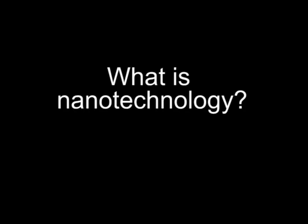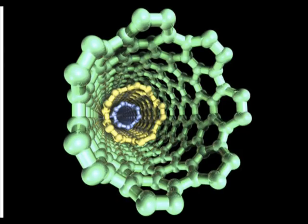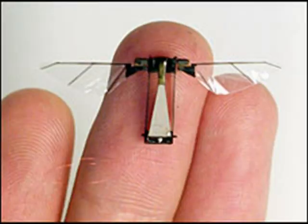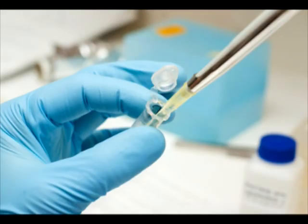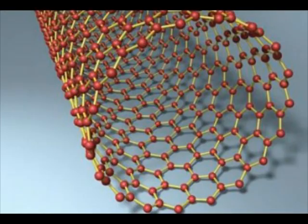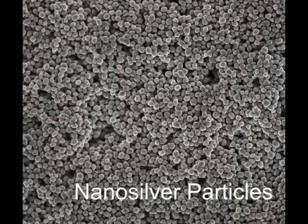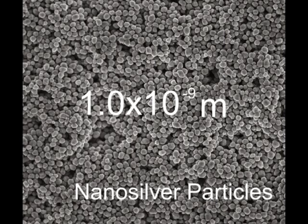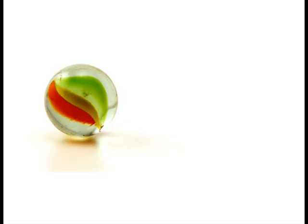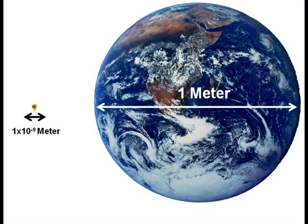What is nanotechnology? Nanotechnology can be defined as a manipulation of matter that ranges from 1 to 100 nanometers in size. It's hard to imagine just how small nanotechnology is. One nanometer is a billionth of a meter, or 1 times 10 to the negative ninth meters. For example, if a marble was the size of a nanometer, then 1 meter would be the width of the Earth.